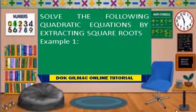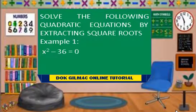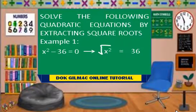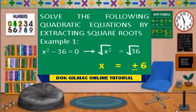Solve the following quadratic equations by extracting square roots. Example number 1: x squared minus 36 equals 0. This implies that x squared is equal to 36. Extracting the square roots of both sides of the equation, we have x is equal to plus and minus 6.